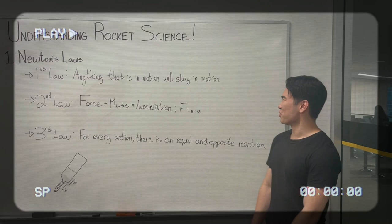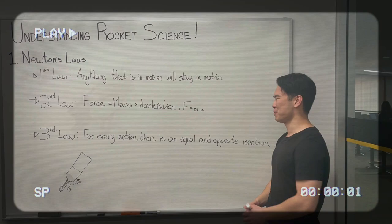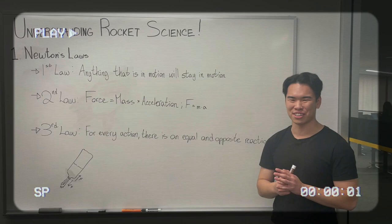In understanding rocket science, we need to understand Newton's three laws of motion. So we have the first law of motion, which states that for anything that is in motion, it will stay in motion. Basically, we have inertia. If you think of an object that's in motion, unless there's any counteracting forces on it, it will continue to proceed in this path of acceleration.